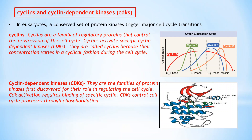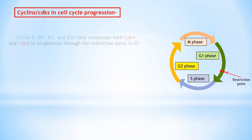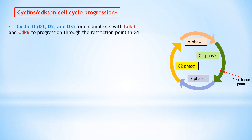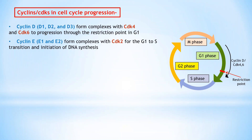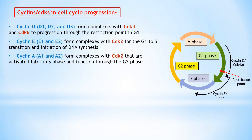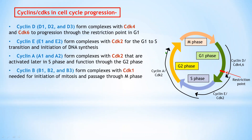Progression from G1 to S is regulated by CDK4, CDK6, and CDK2 in association with cyclin D and cyclin E. The D-type cyclins — D1, D2, and D3 — form complexes with CDK4 and CDK6 that play a critical role in progression through the restriction point in G1. Cyclin E1 and E2 form complexes with CDK2 required for the G1-to-S transition and initiation of DNA synthesis. CDK2 with A-type cyclins A1 and A2 forms complexes activated later in S phase and functioning through G2 phase.